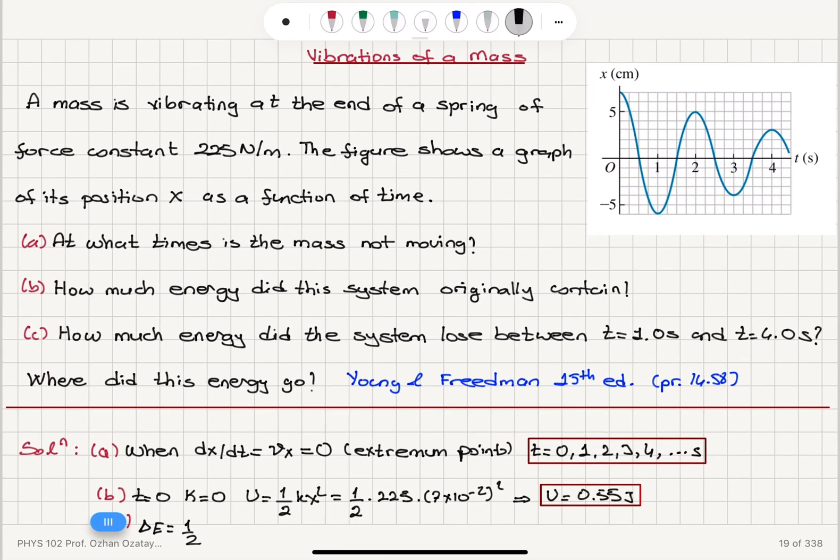So we can write here one half kx squared, one half 225. At t equals one second, we have six squared. So it's six centimeters at this point. And at t equals four, it's three centimeters. So six squared minus three squared times 10 to minus four meters squared. This gives us 0.30 joules.